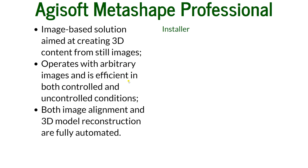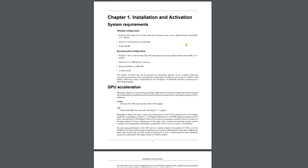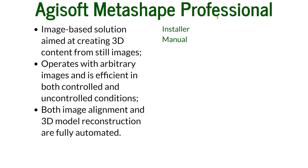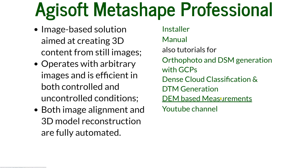The alignment and 3D model reconstruction is fully automated. You have links available in the slides where you can find the installer and a very detailed PDF manual — 145 pages — where you can have all your Agisoft questions answered. You can also find shorter tutorials for orthophoto and DSM generation, dense cloud classification, measurements, and the Agisoft Metashape YouTube channel.